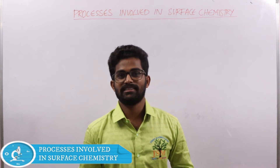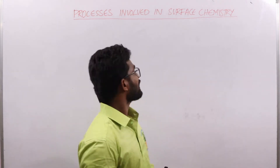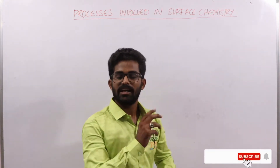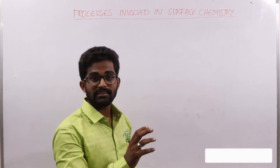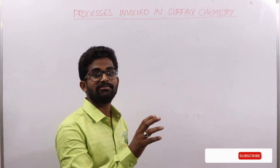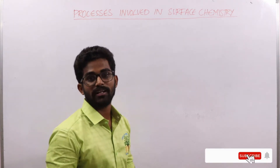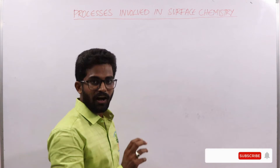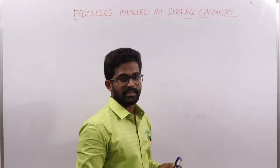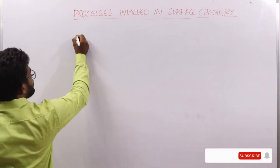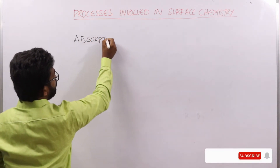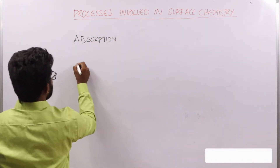Hi viewers, welcome to JSN. Today we are going to discuss some processes involved in surface chemistry. In the last videos we discussed what is adsorption, how thermodynamics is involved in adsorption, and how kinetics plays a role in adsorption. Now let us discuss some more processes involved in surface chemistry — they are absorption, sorption, desorption, and occlusion.